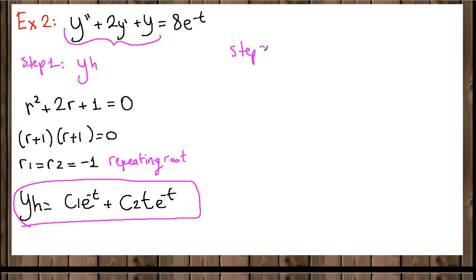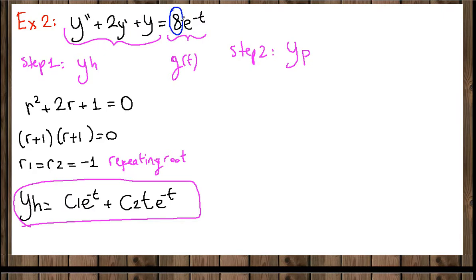Step 2 is to find y_p, the particular solution. We observe the function g(t) = 8e^(-t). It is made up of a constant (polynomial) and an exponential. For the polynomial part, our generic form uses constant A; for the exponential part, the generic form is e^(α·t), which here is e^(-t).